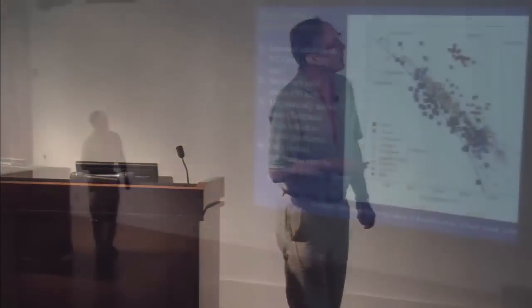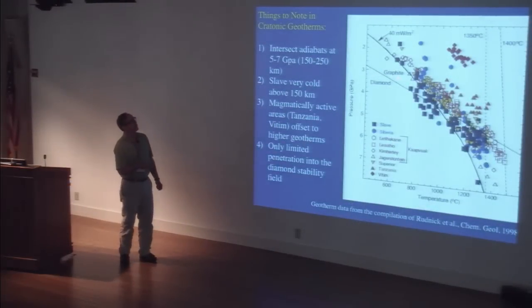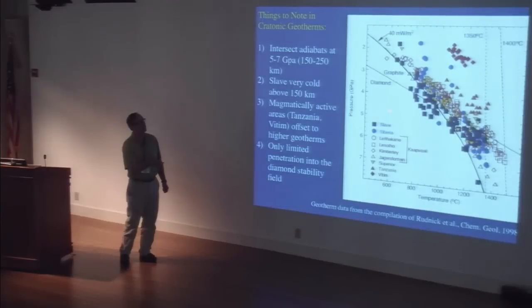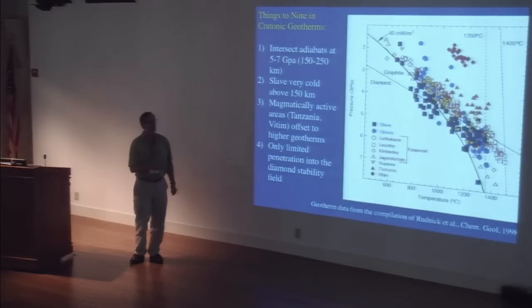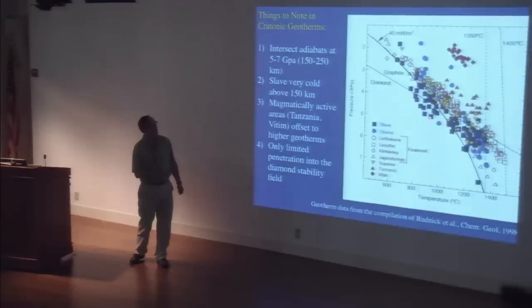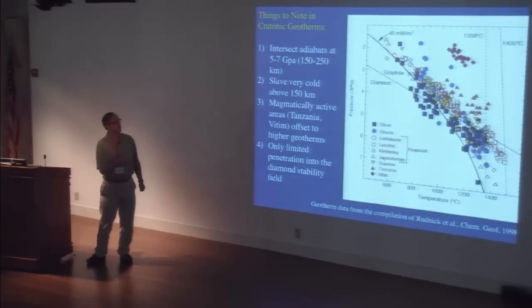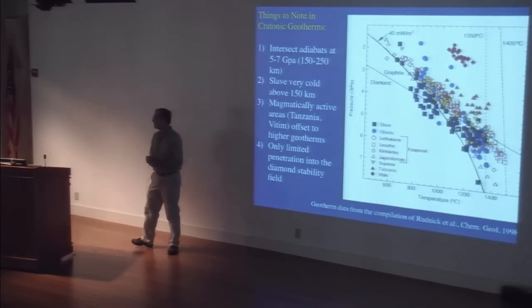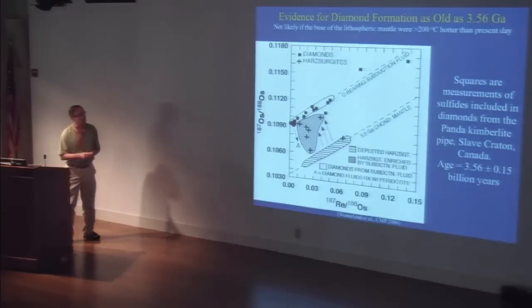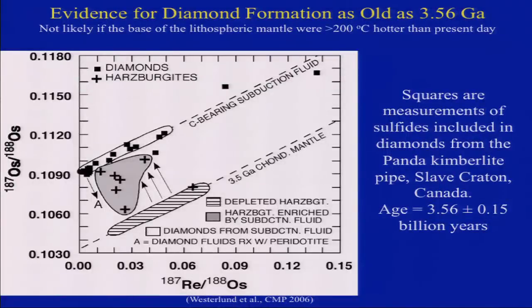Looking at the graphite-to-diamond stability line: diamond is both the high-pressure and low-temperature form of carbon in the mantle. Only a small window of temperatures is low enough to sample the diamond stability field within the lithosphere. If the geotherms were higher in the past, you wouldn't find diamond in the continental lithosphere. Yet diamond formation dates back to 3.56 billion years — seen in the diamond inclusion isochron from the Slave Province — suggesting cratonic lithosphere cooled quickly after it formed, down to temperatures of 1,000–1,200°C even in the early Archean.